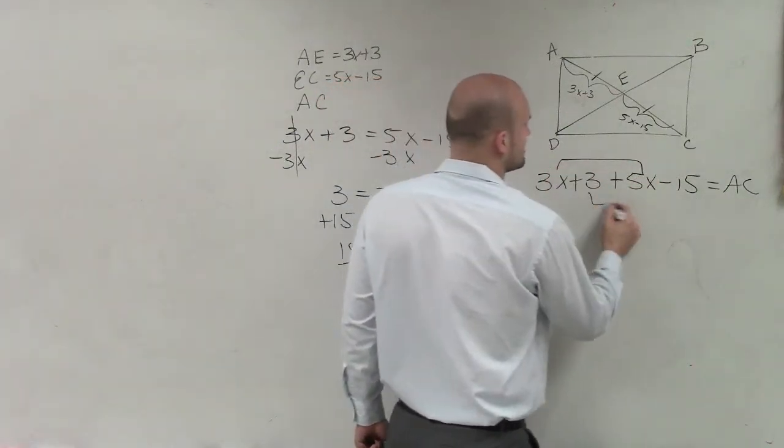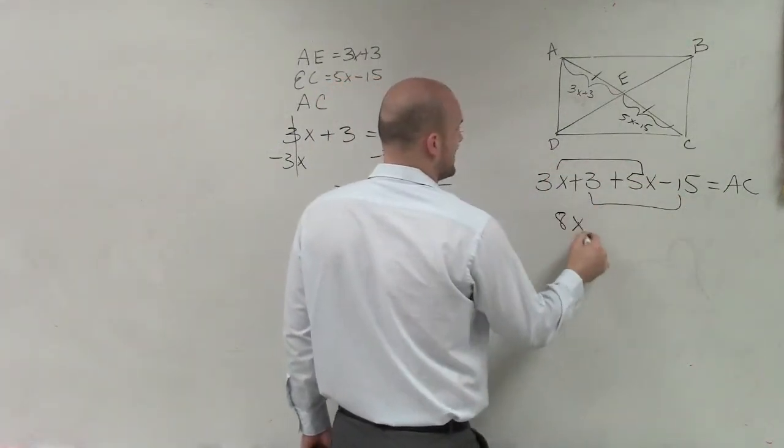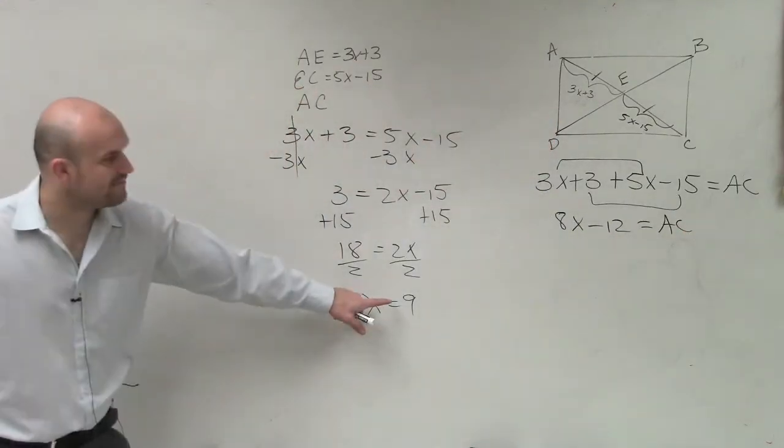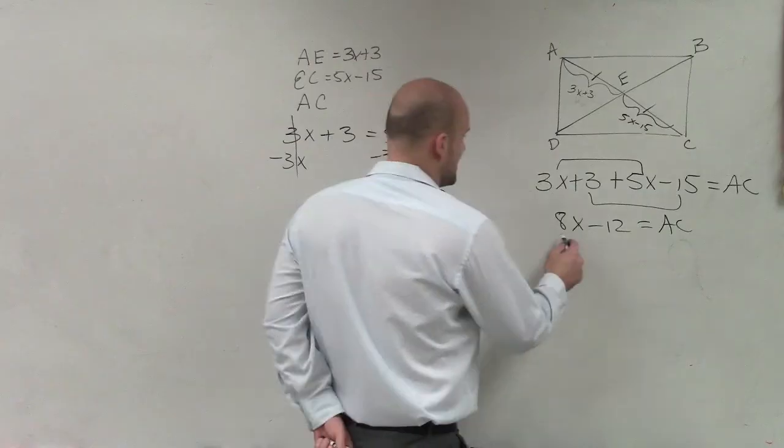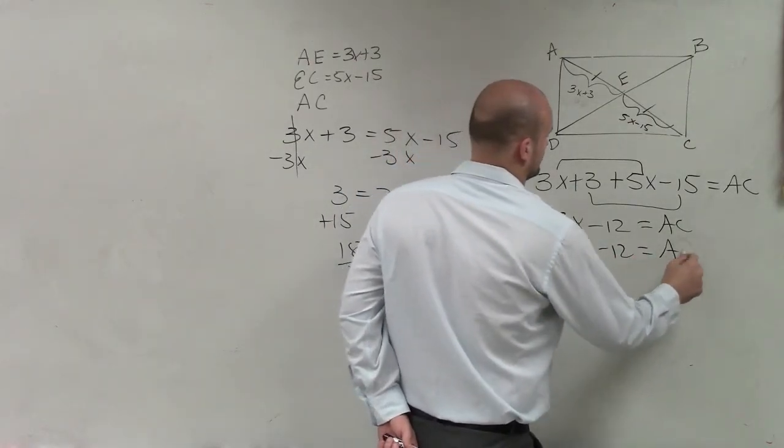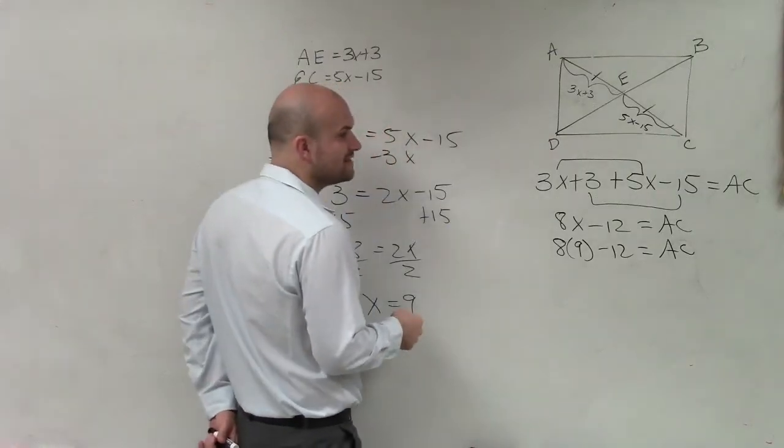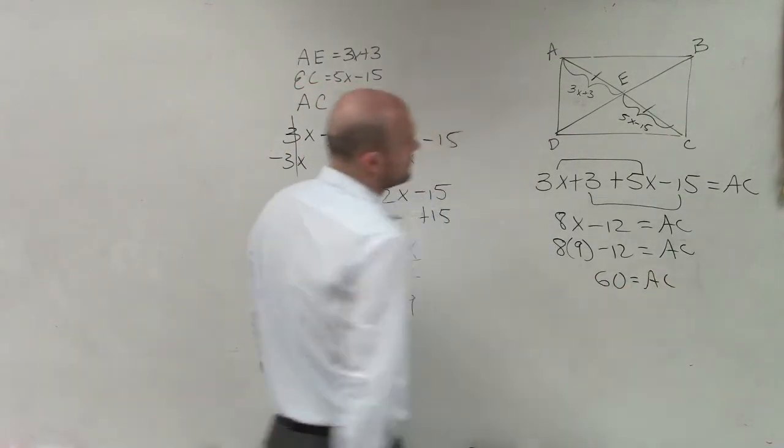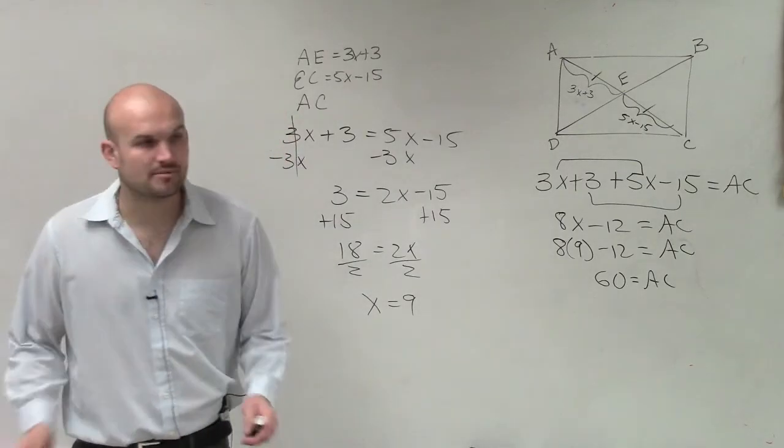Then I can add them up together. So 3x plus 3 plus 5x minus 15 equals AC. This distance plus this distance is that distance. Now I can combine these. So I have 8x minus 12 equals AC. Now, I know my value of x, which is 9. 8 times 9 is 72, minus 12 is 60. And there you go. That was how you do number 3.